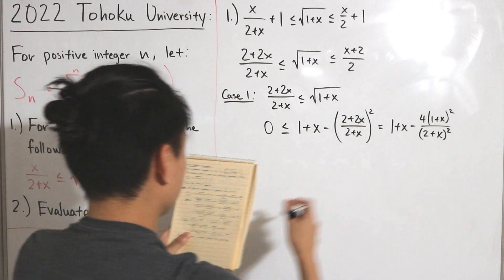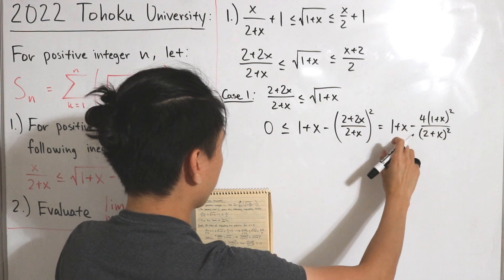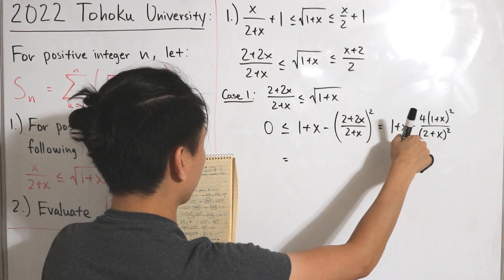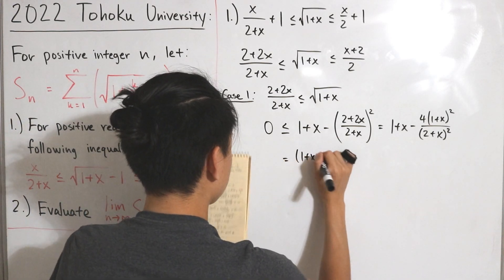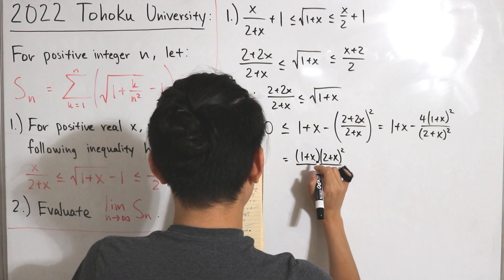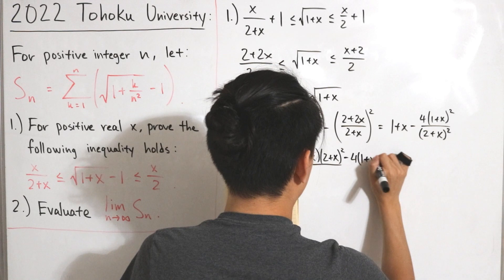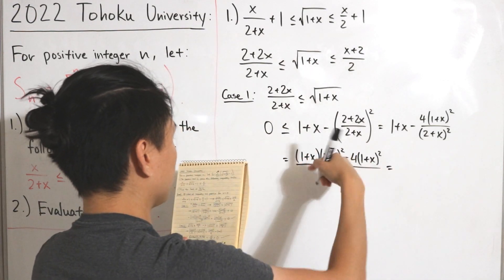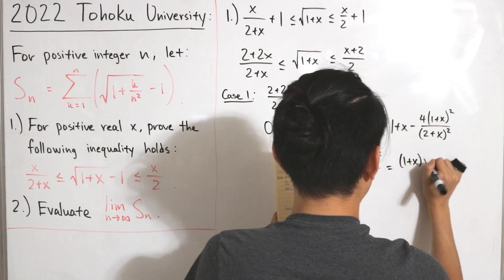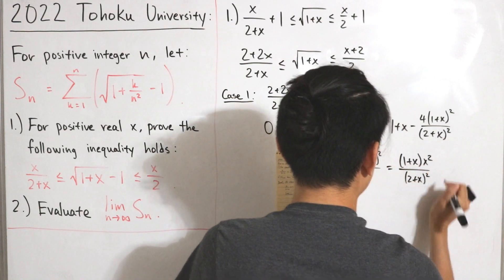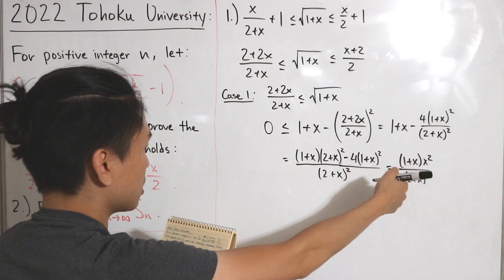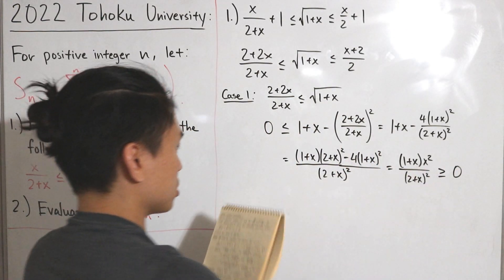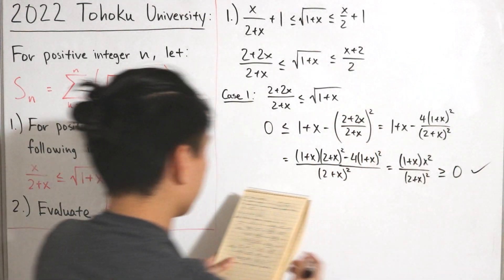After combining over a common denominator and factoring, the expression reduces to (1 + x) · x² / (2 + x)². For any positive real x, this expression is always greater than or equal to zero, so the inequality holds. That confirms the left-center part of the compound inequality is true.